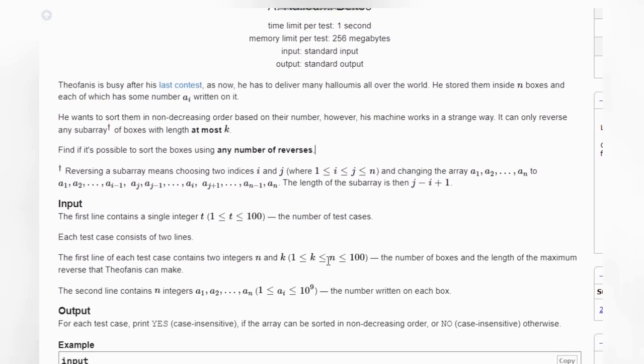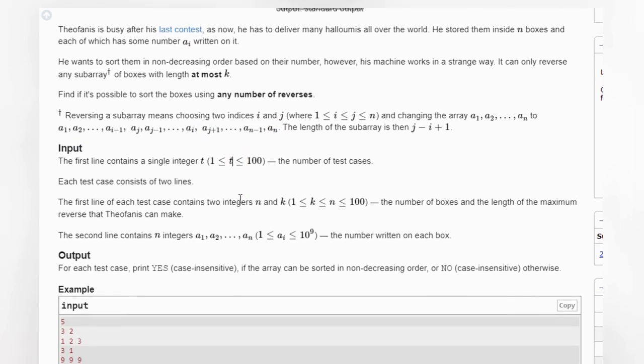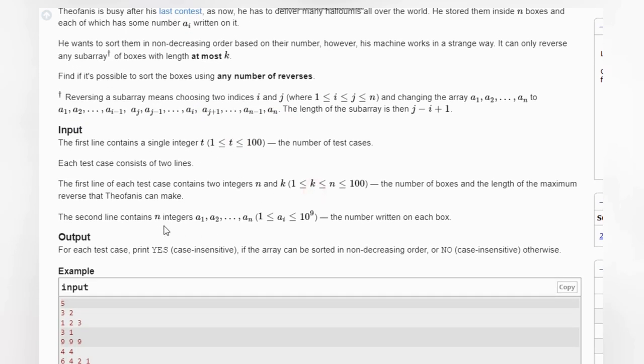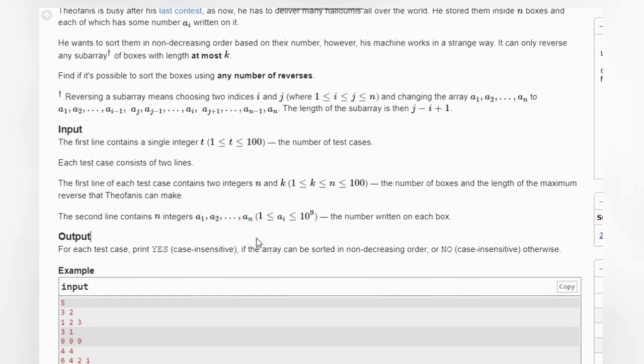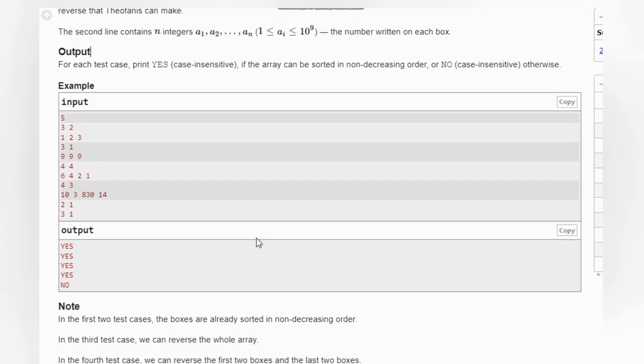We can do as many reverses as we want. Reversing a subarray means we are taking some part and reversing it. We are given n and k, and then the next line has a1 to an integers. So let's see how we can solve this problem.